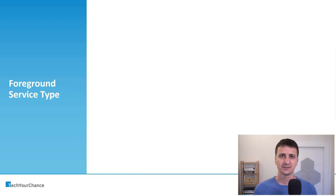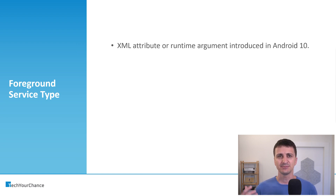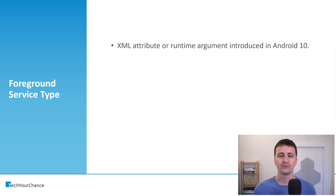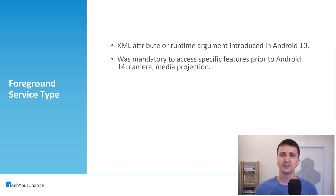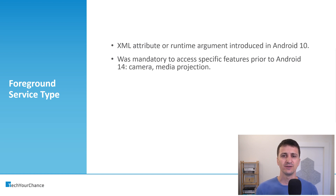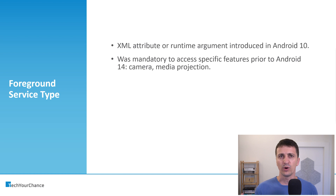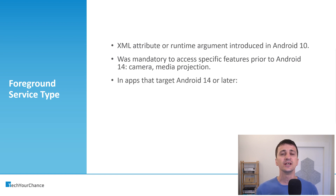There are also foreground service types. Foreground service type is an XML attribute or runtime argument that was introduced in Android 10, so it's a relatively recent addition to the Android framework. It was mandatory to access a very specific set of features prior to Android 14 — for example, if your foreground service would access camera or media projection to capture the screen, you would need to specify the corresponding type. However, for most use cases the system wouldn't care about what type you specified. This is going to change in Android 14.